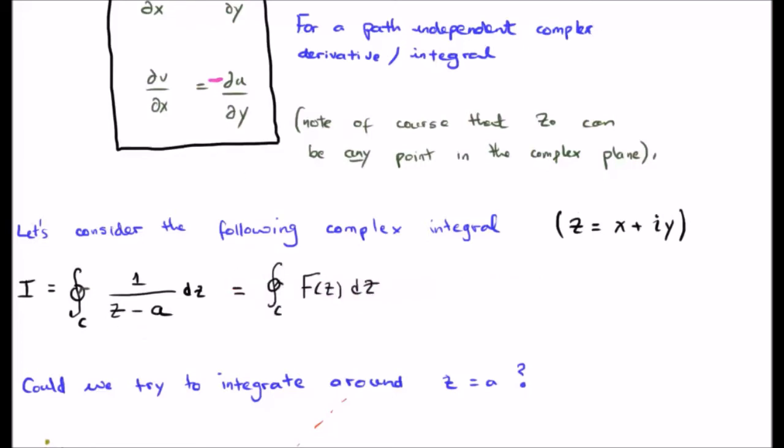I'd like to introduce a small bit of notation before we begin. Capital F of z is going to be our entire function. So in this case, capital F of z is 1 over z minus a. But later on we're going to get more complicated functions.